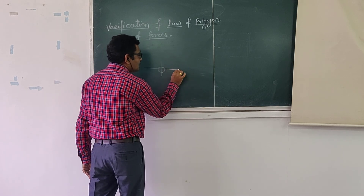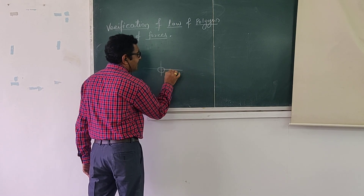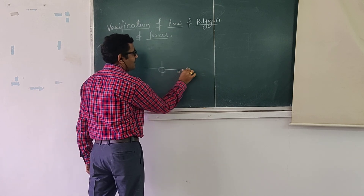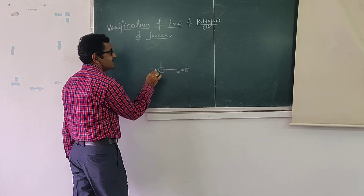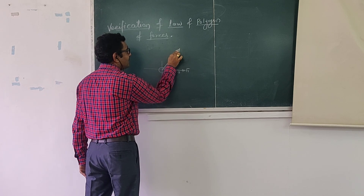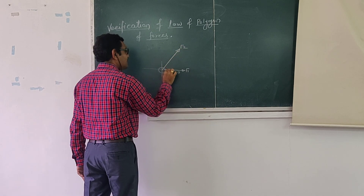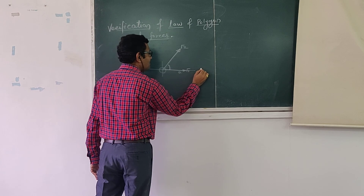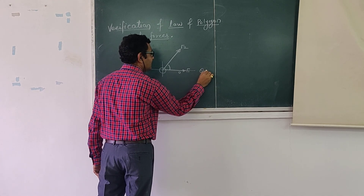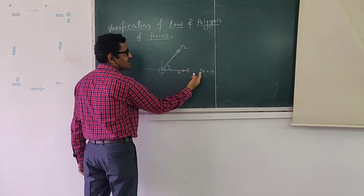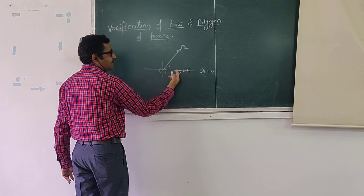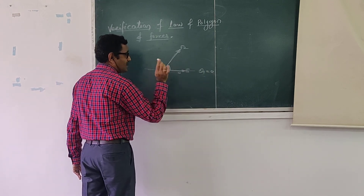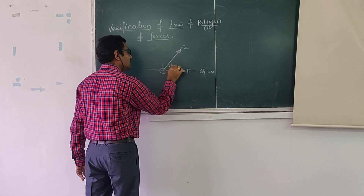The first force F1 is always applied at an angle of zero degree — so theta 1 equals zero. The second force F2 is applied, and with respect to this zero degree reference, we measure the angle theta 2. This is the angle made by F2 with respect to zero degree.